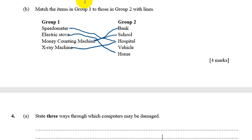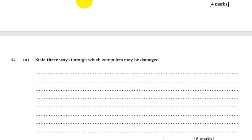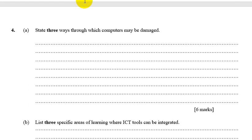Number four says: state three ways through which a computer may be damaged. One: exposing it to too much dust. Two: exposing it to excessive heat. Three: lack of stable power — if your electricity supply keeps switching on and off, it can damage the computer. Four: exposing your computer to a virus. Five: attempting to fix the computer yourself when you are not an expert.